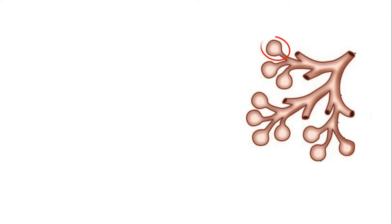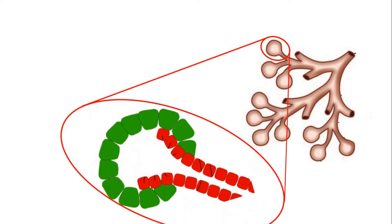Within each lobule, many acini or alveoli are present. Each of those consists of a single layer of cuboidal epithelial cells surrounding the lumen or the central opening where the saliva is deposited after it's been produced by those secretory cells.